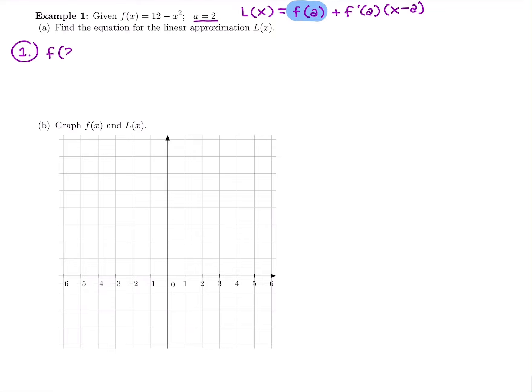I'm going to plug in f(2) into the original function. So 12 minus 2 squared, 12 minus 4 is going to be 8. So I have that first part figured out, f(2) is 8. Now I'm going to take 2 and plug it into the derivative. The derivative of 12 is 0. Derivative of minus x squared is going to be minus 2x. We're going to do f'(2), which is going to be negative 2 times 2. So our f'(2) is negative 4.